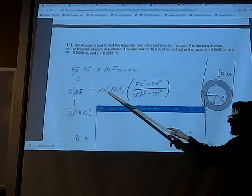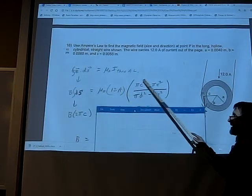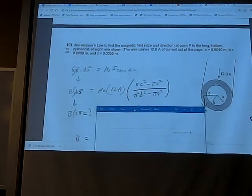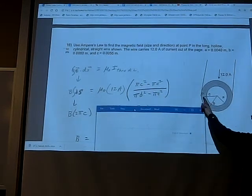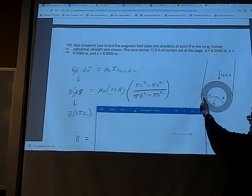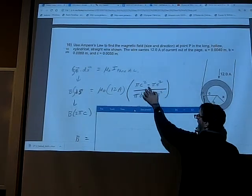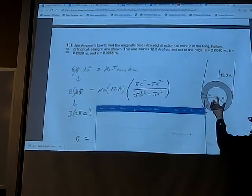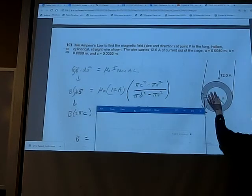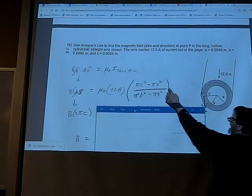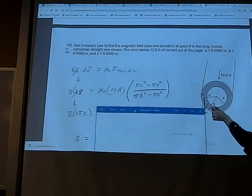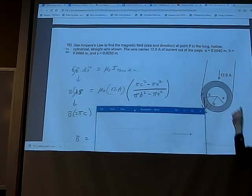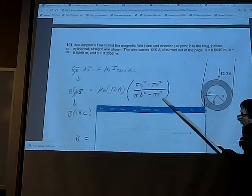So what I've done is I've taken the total current in the wire, 12 amps, and I multiplied by the ratio of those two areas. So πc² is the area of a circle of radius c, but I have to subtract out the area of the hole, πa², because there's no current here in the hole. So this numerator here is the area of a little circular sliver, that little donut.